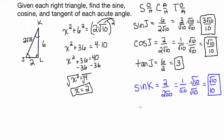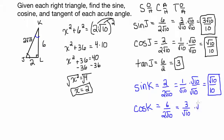Now let's do the cosine of angle K, which is adjacent over hypotenuse. Adjacent is 6, hypotenuse is 2 root 10, so it's going to be 6 over 2 root 10. That simplifies to 3 over root 10, and then rationalize the denominator by multiplying by root 10 over root 10, giving you 3 root 10 over 10.